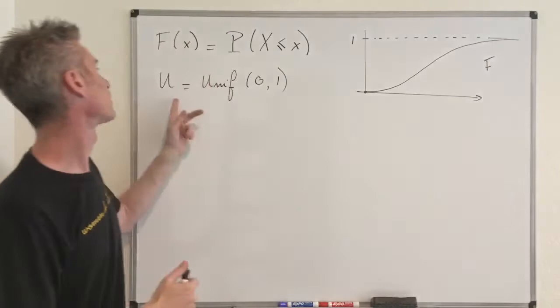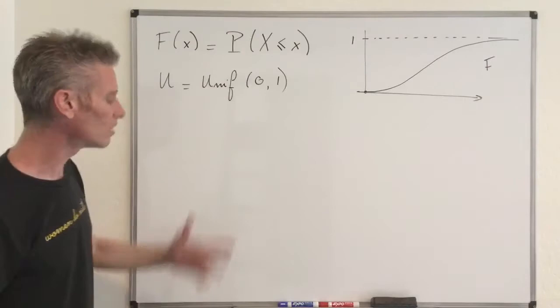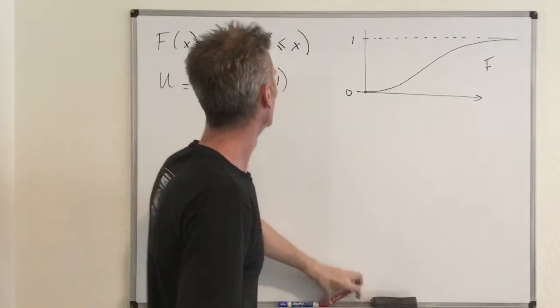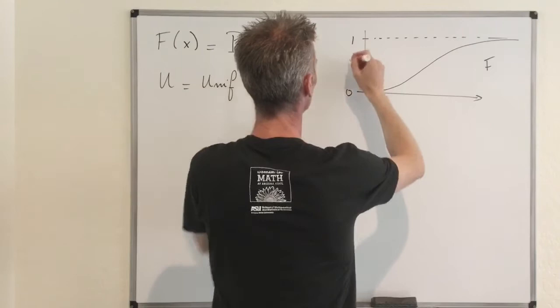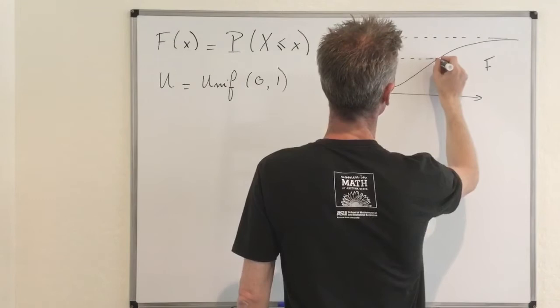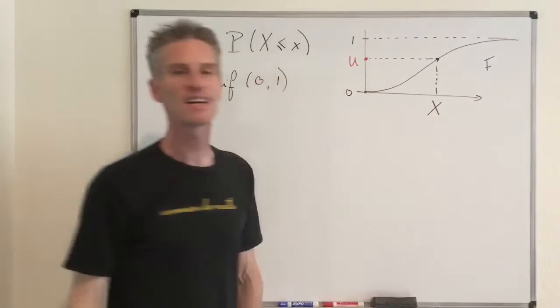The trick is simple. Here you have the interval zero-one. After generating a uniform value U using a computer, you look at the value of U here — maybe U is going to be at some point. Then you look at the horizontal line, go across to the curve F of x, and then go down. So here you are going to have X. That's how you can mathematically generate a continuous random variable from the uniform random variable in the interval zero-one.